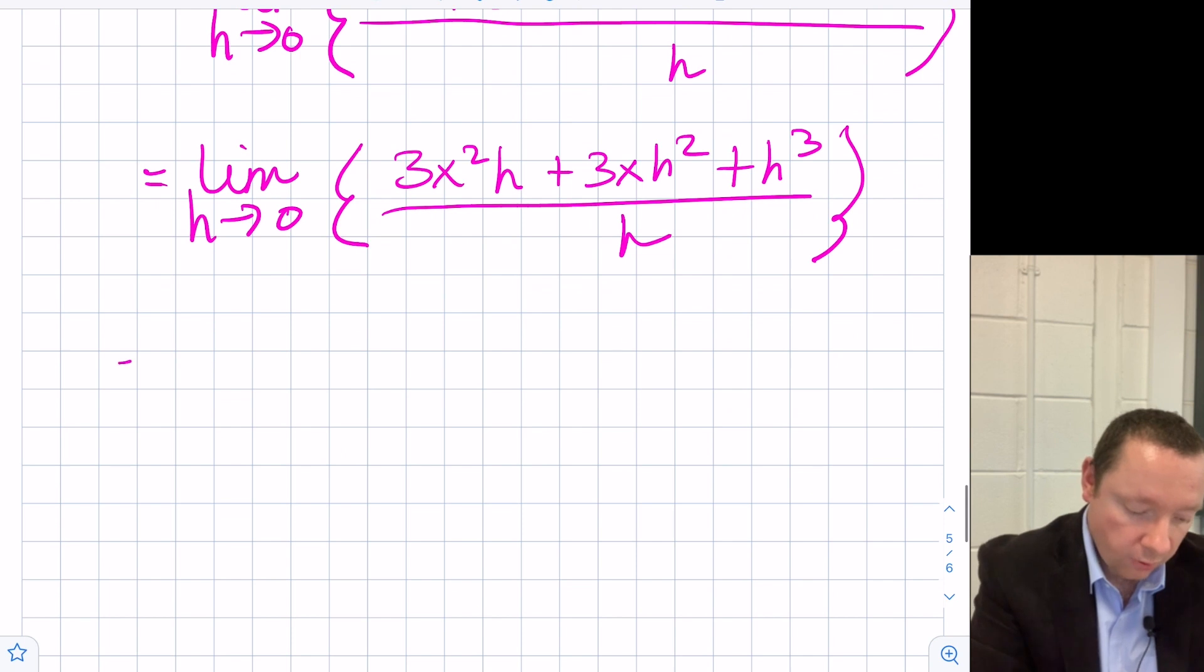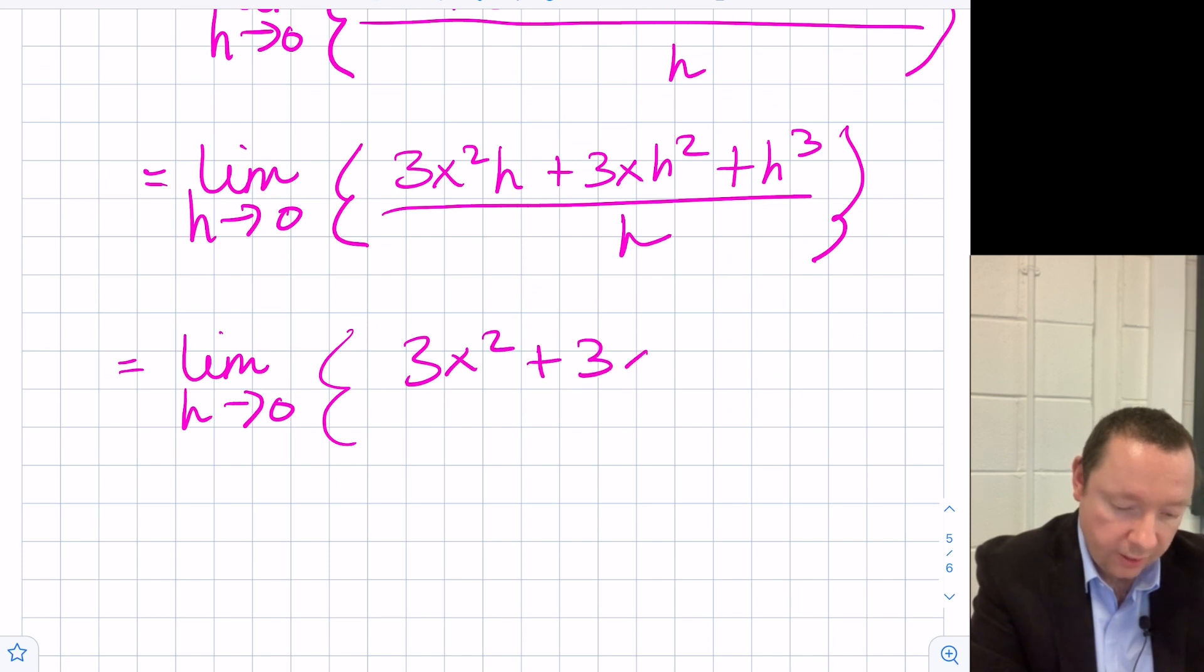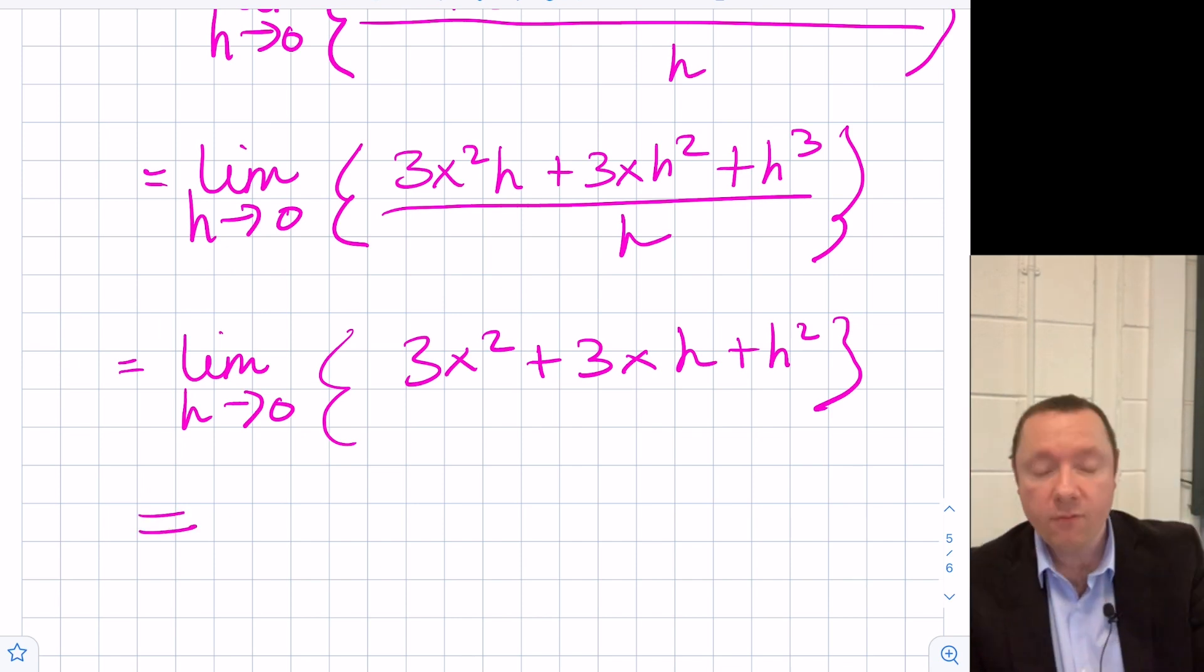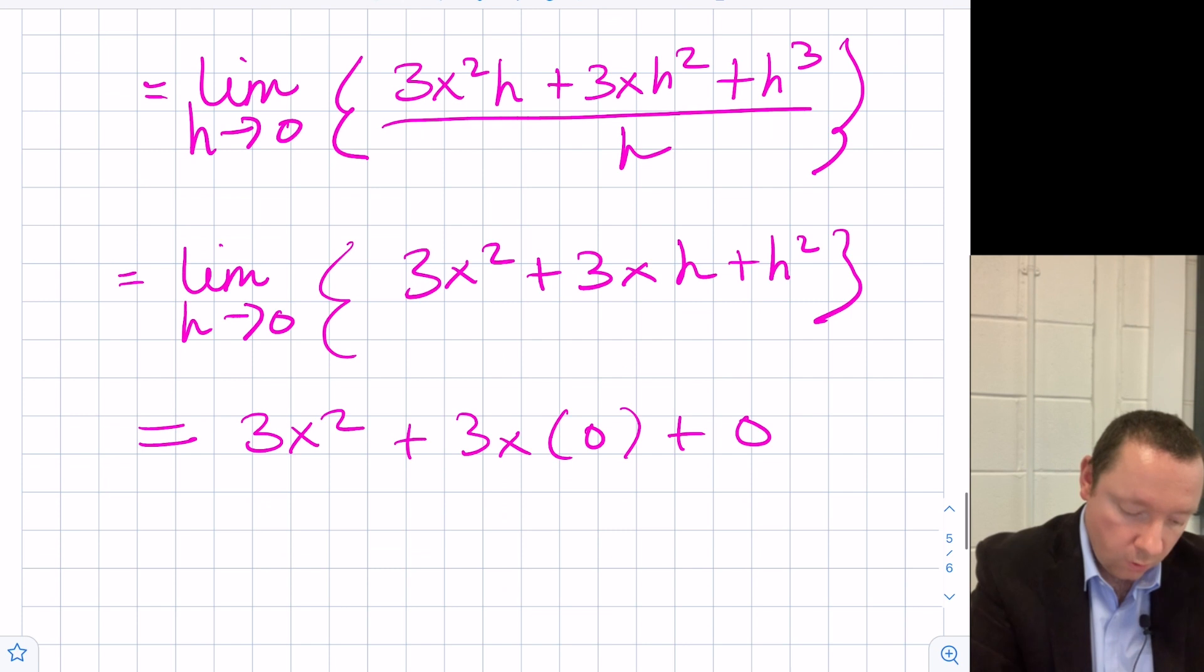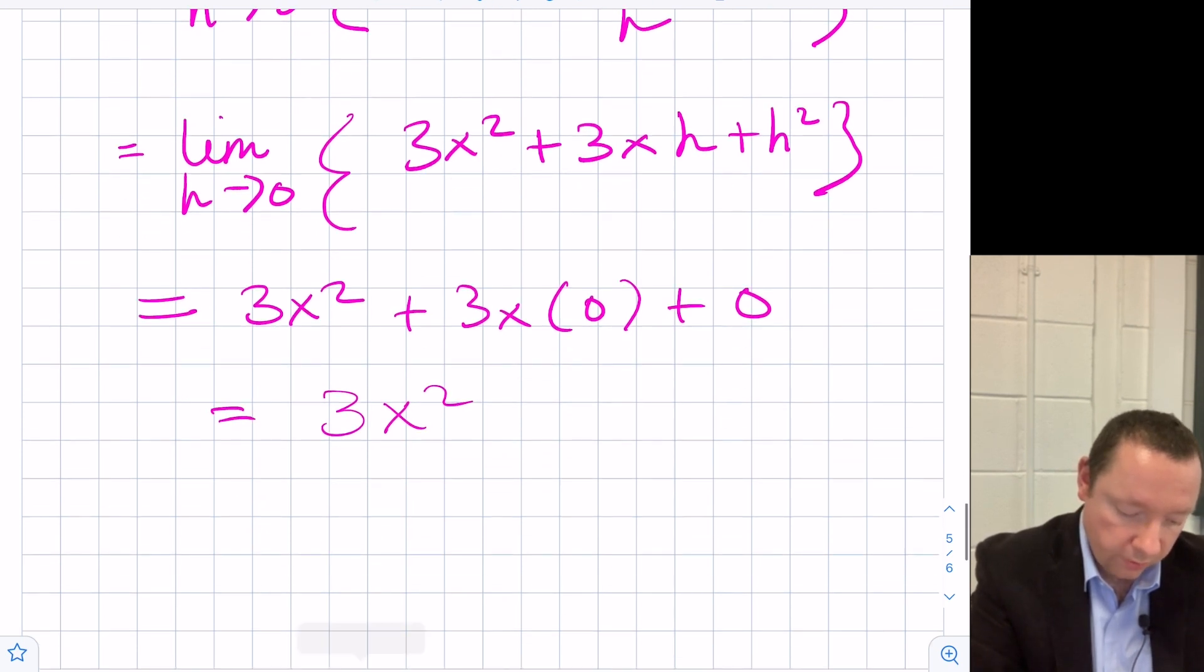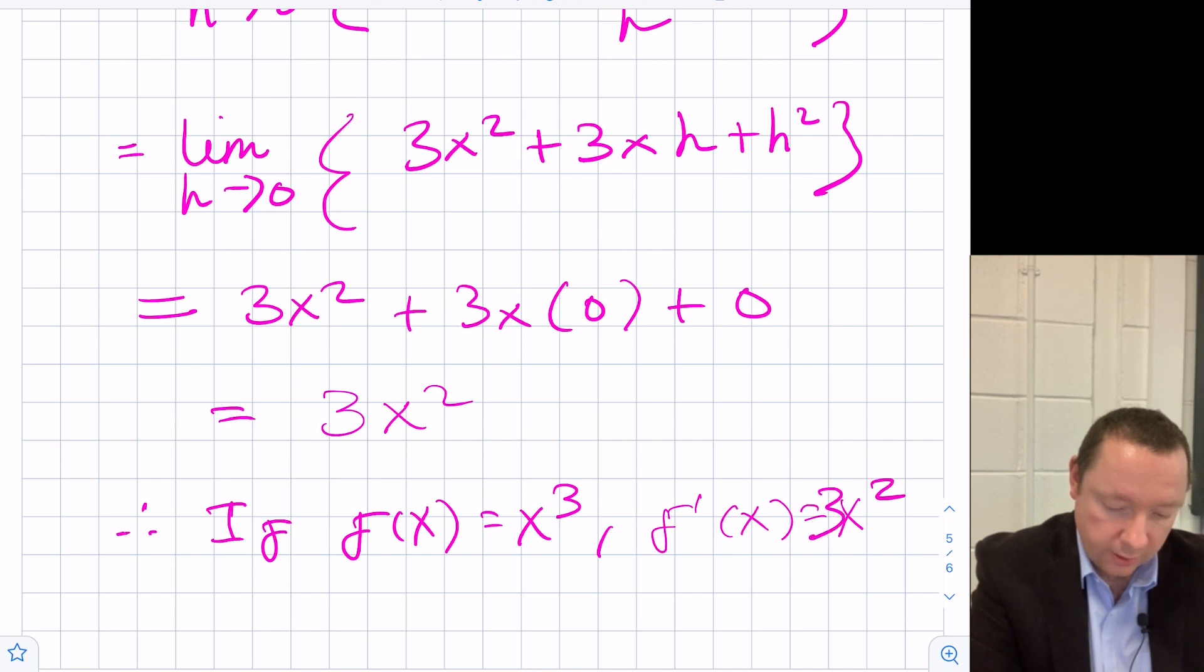We can now divide through by the h to get 3x squared plus 3x h plus h squared. Now there's no fraction. So as h goes to zero, that equals 3x squared plus 3x times nothing plus nothing, or it's just equals 3x squared. So therefore, if f of x equals x cubed, f dash x equals 3x squared.